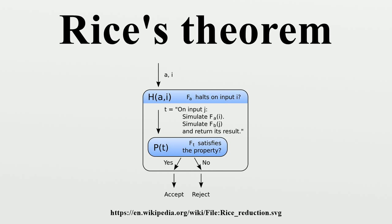Note that our halting decision algorithm never executes t, but only passes its description to the squaring identification program, which by assumption always terminates, since the construction of the description of t can also be done in a way that always terminates. The halting decision cannot fail to halt either. In pseudocode: define t(A, I): return n × n; return is_squaring_function(t).